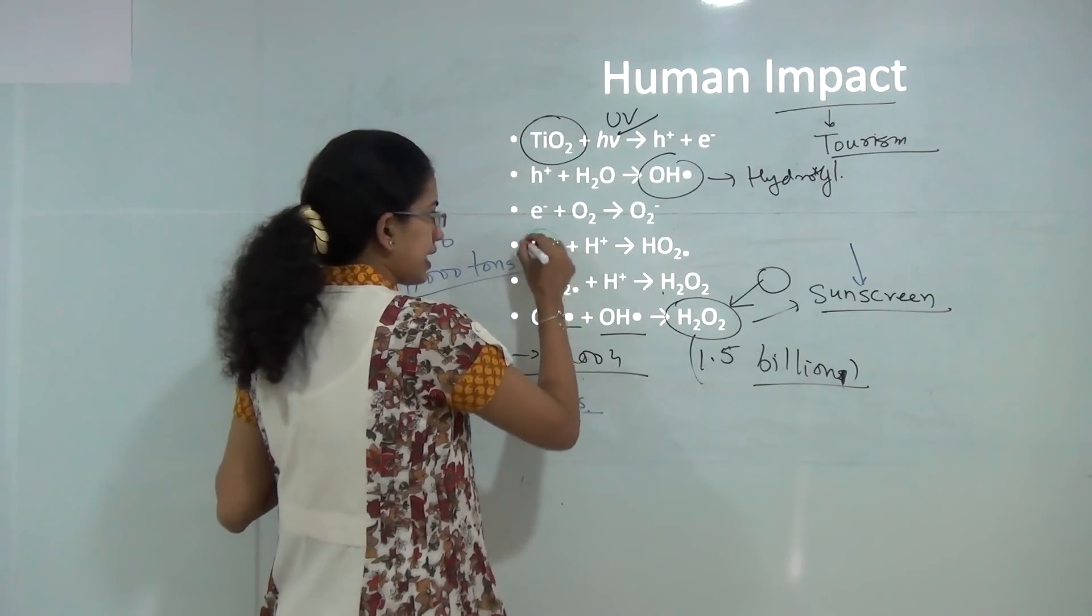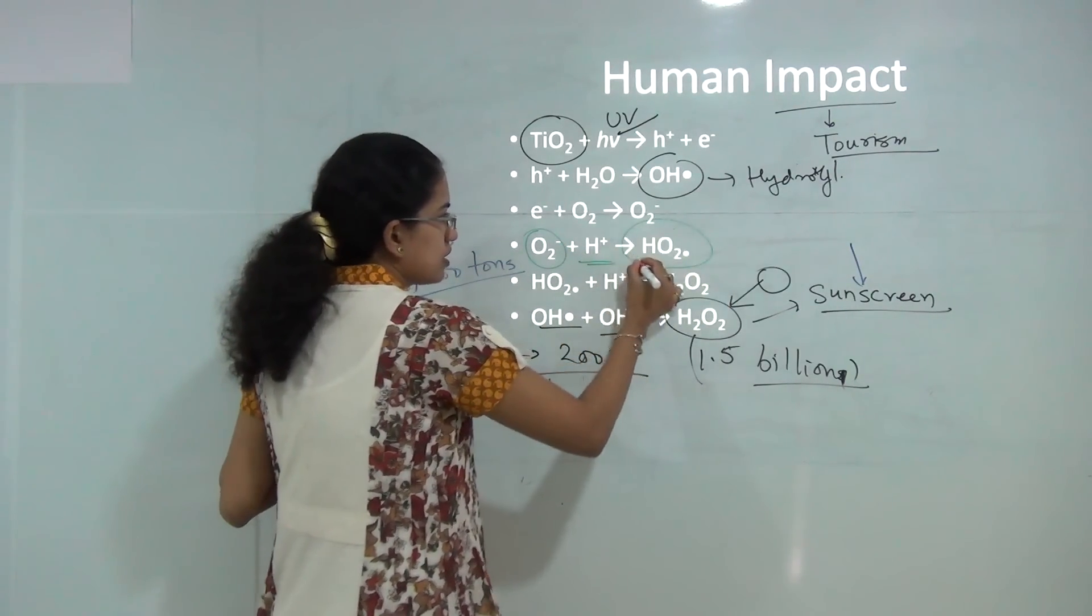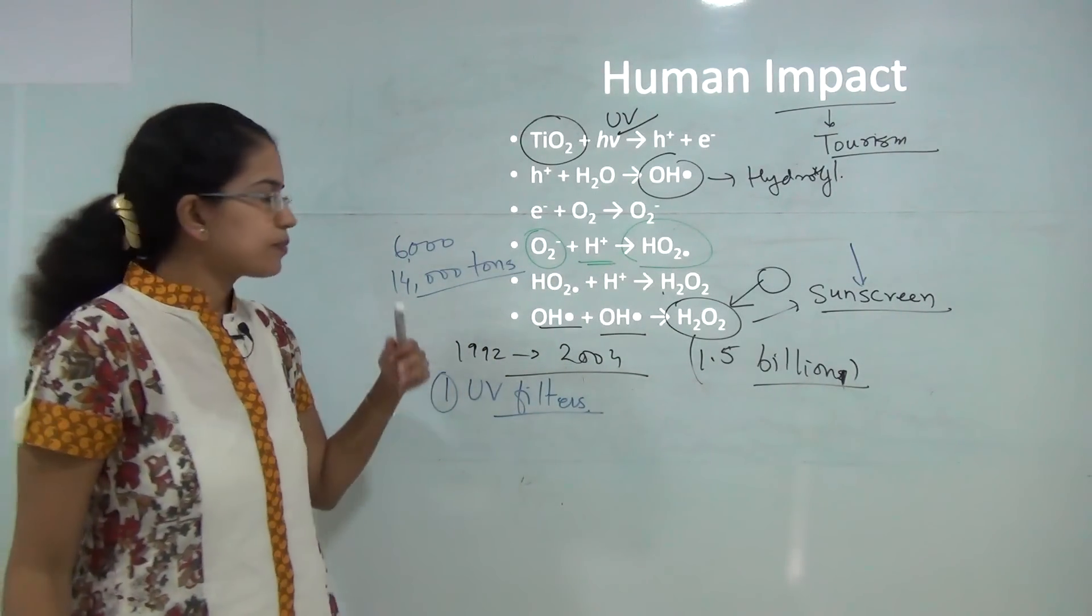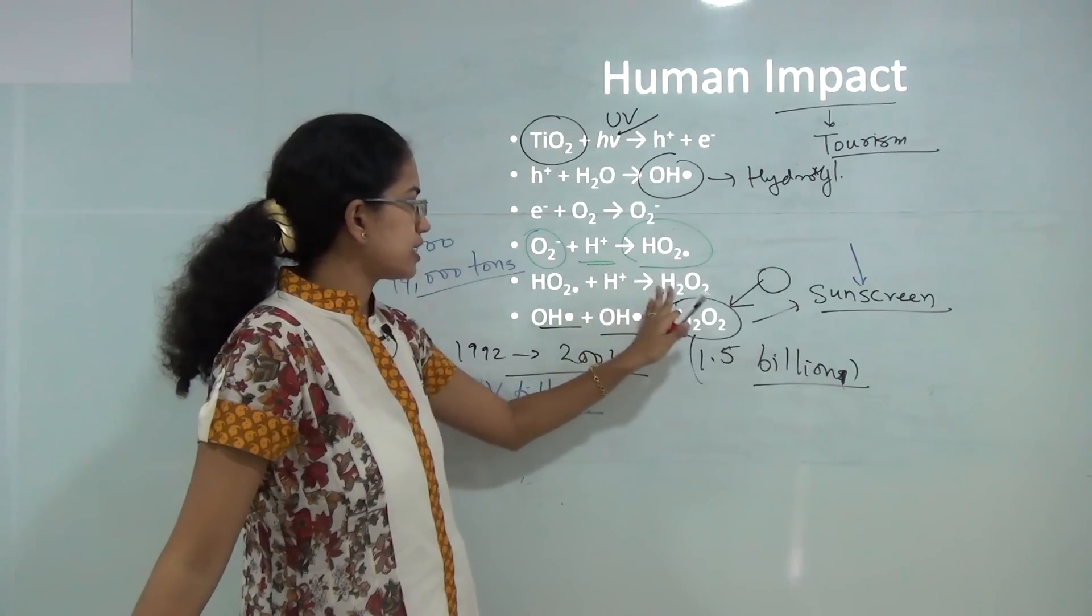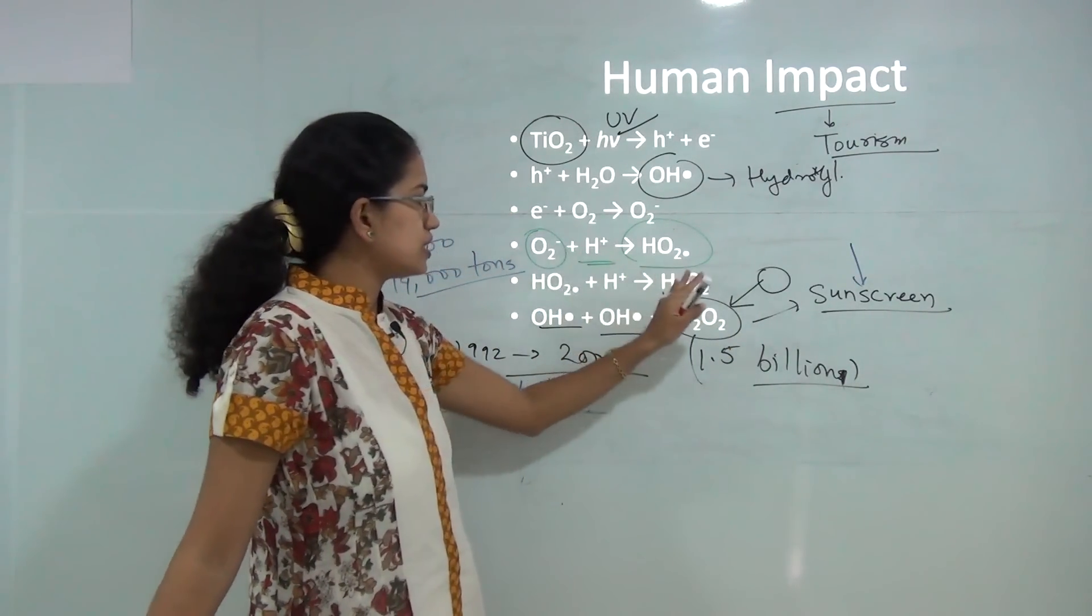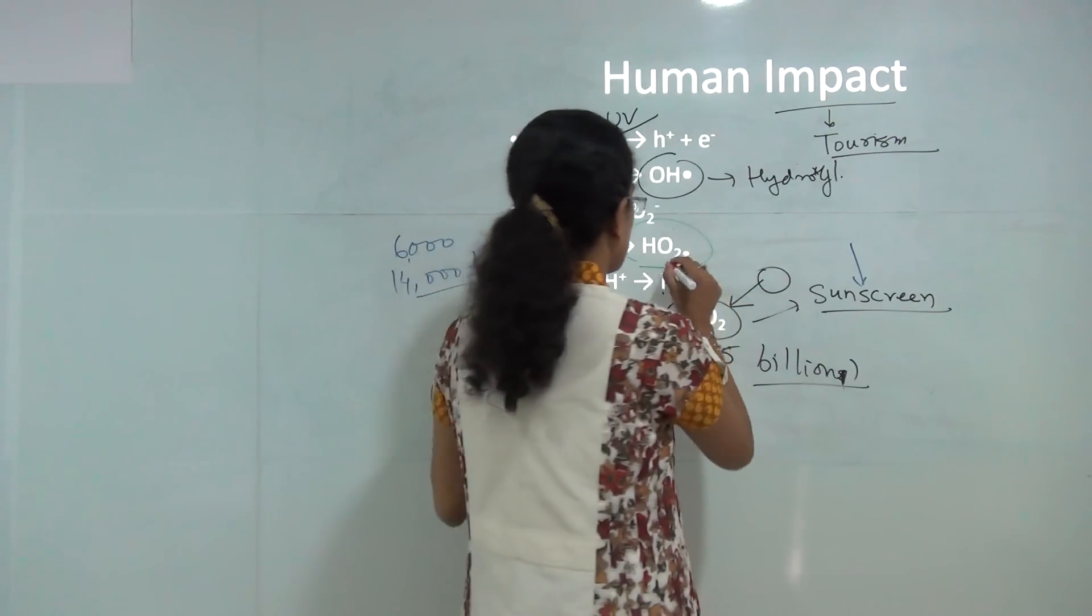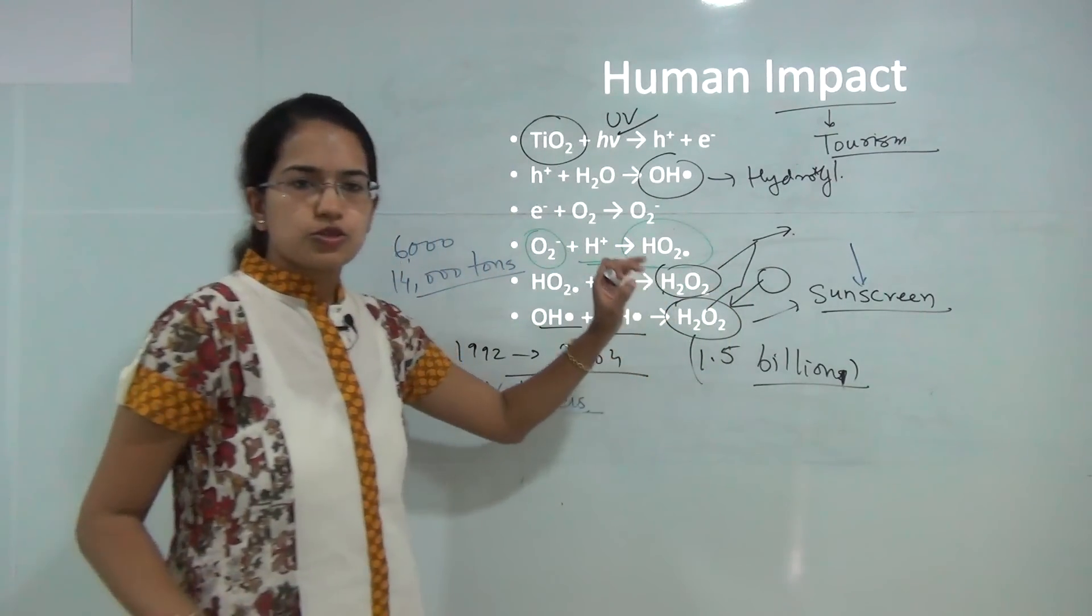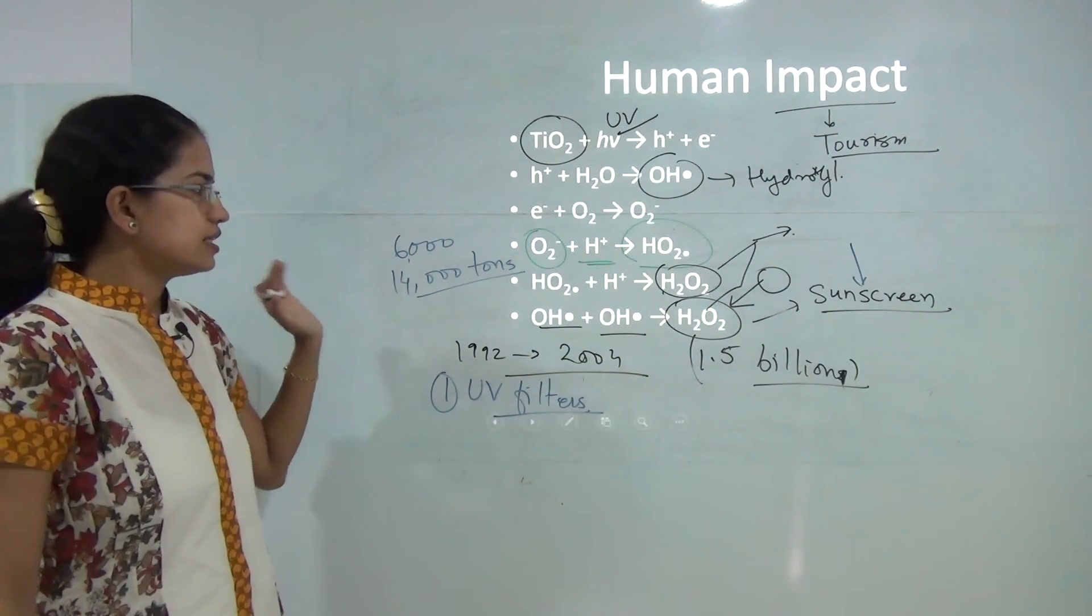The other is this electron reacts with the oxygen molecule and forms the superoxide and this superoxide protonates and leads to again formation of hydrogen peroxide and in both these cases you have the release of hydrogen peroxide and this is highly detrimental to the coral population in the region.